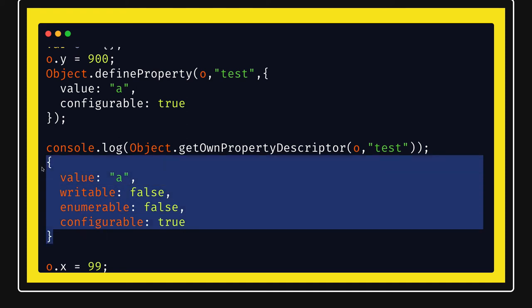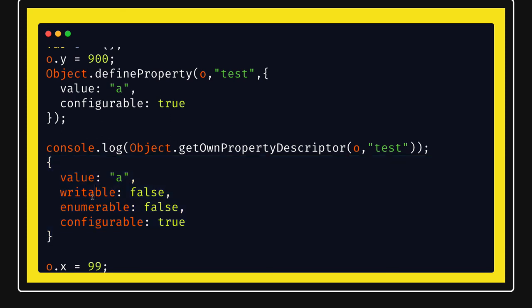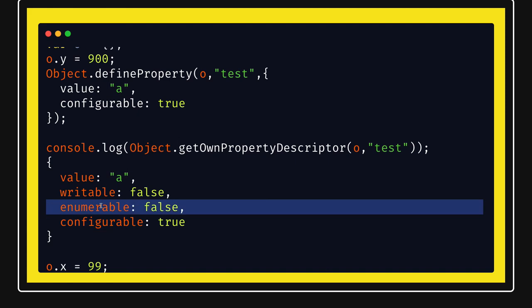This descriptor object in JavaScript is very important. We need to have a good understanding of it if we want to learn in depth about JavaScript objects. Now talking about these properties one by one: configurable is a boolean representing the descriptor. If configurable is true, then this property can be deleted from the object. If enumerable is true, then only you will be able to iterate this object property. If writable is true, then only you will be able to update the property.